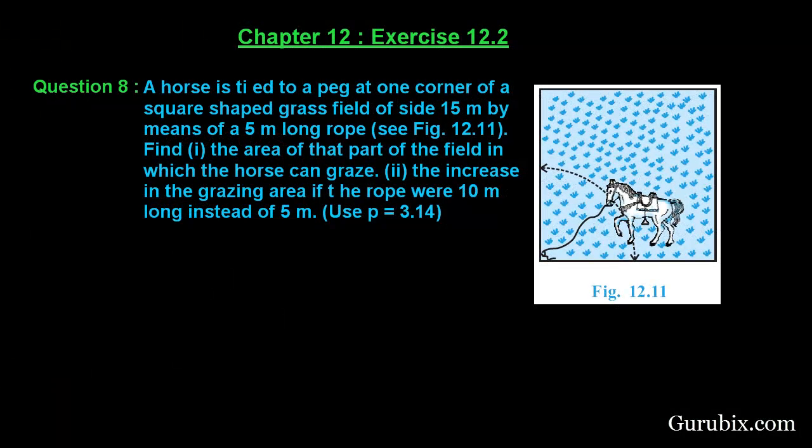Welcome friends, let us solve question number 8 of exercise 12.2 of chapter 12. The question says a horse is tied to a peg at one corner of a square shaped grass field of side 15 meter by means of a 5 meter long rope.